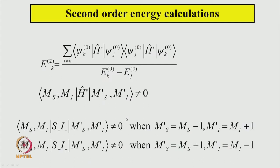To do the second order calculation, this is the expression for the second order correction to energy. Here the kth state is one of the four states, and this energy involves a matrix element. Psi_k is the state k, and the sum runs over all other possible states j different from k. This is the difference of energy between the k and j states. For these to be nonzero, the integrals must be nonzero.